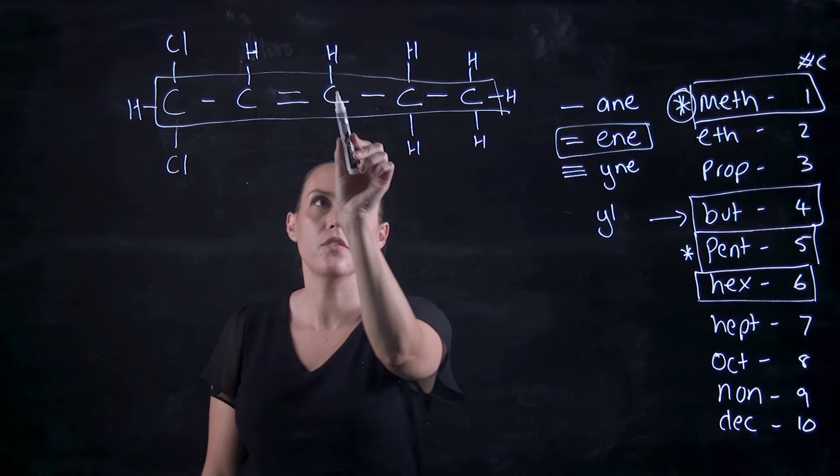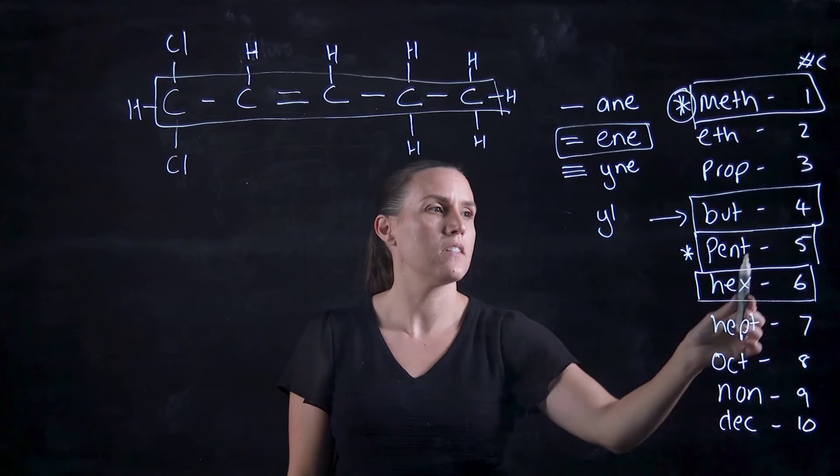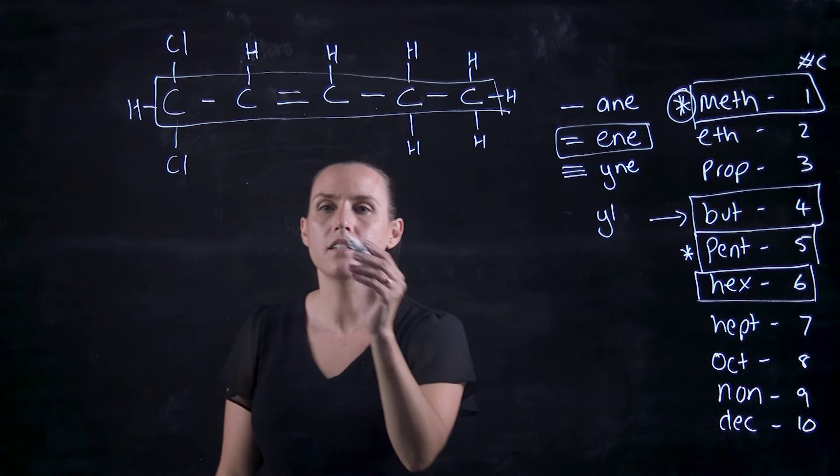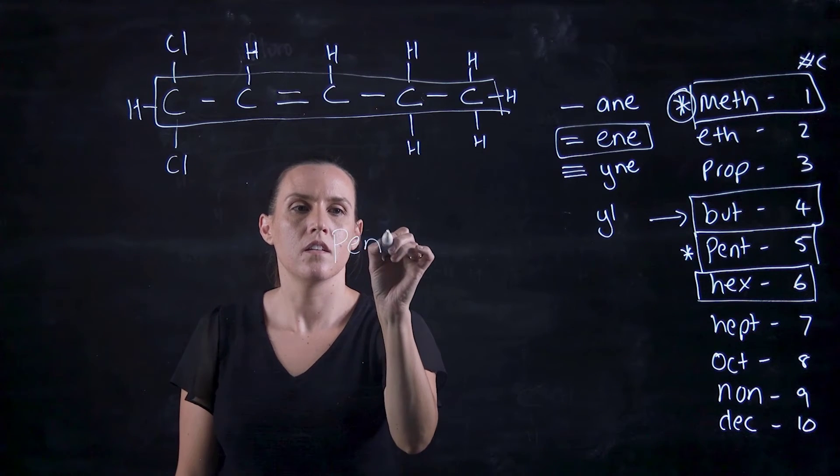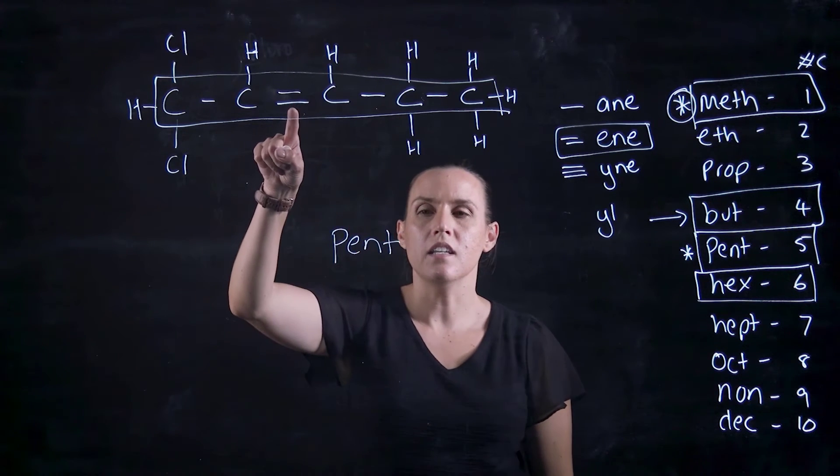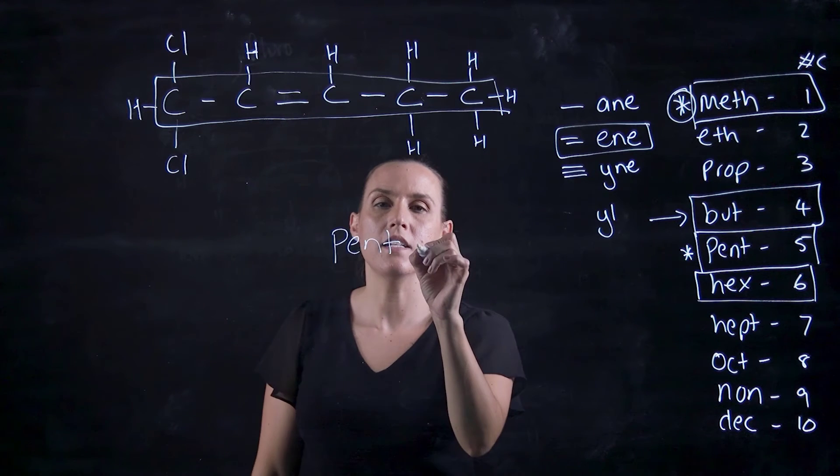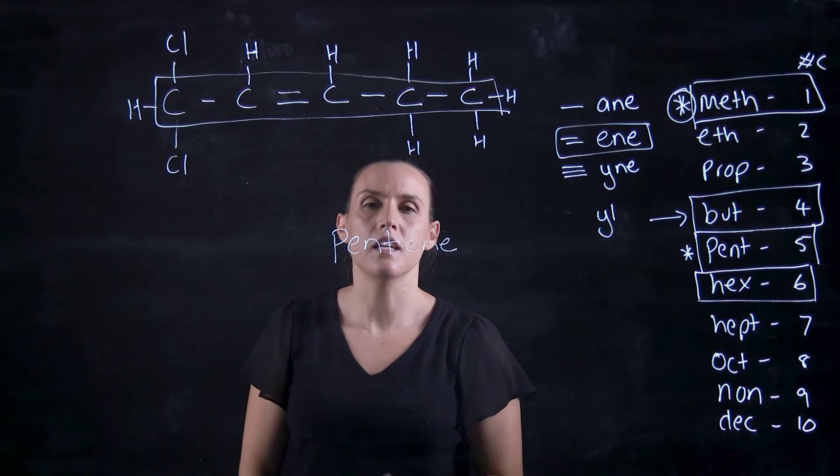So like I said, 1, 2, 3, 4, 5 carbons. So we're going pent. Now it's a double bond. So pent-ene is that backbone.